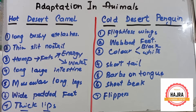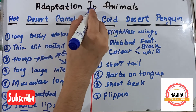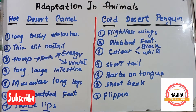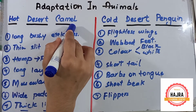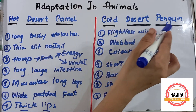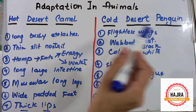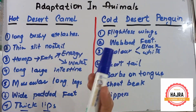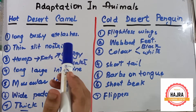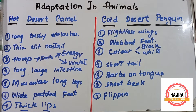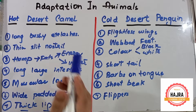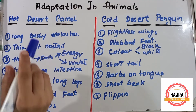Assalamu alaikum friends, welcome back to my YouTube channel. In this video tutorial we will learn about adaptation in animals. I have written two animals on my whiteboard: number one is hot desert camel and number two is cold desert penguin. These two animals have adaptations that allow them to survive in harsh areas such as the hot desert and the cold desert. Let's study their adaptations one by one, starting with the camel.